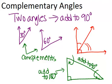That means that the two non-right angles in the triangle are complementary because they have to add up to 90 degrees. So they are complements of each other, or they are complementary angles.